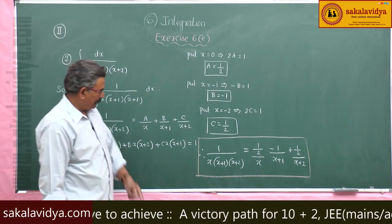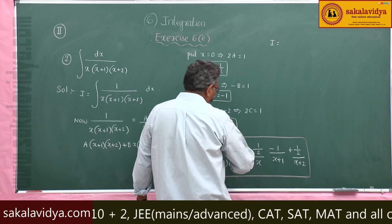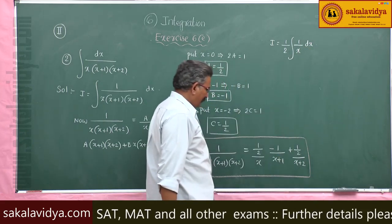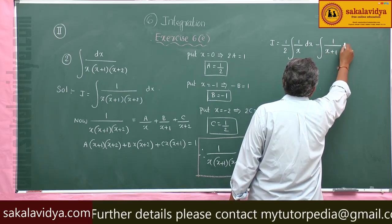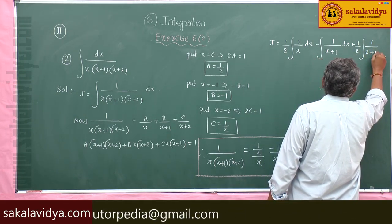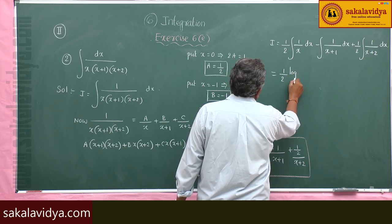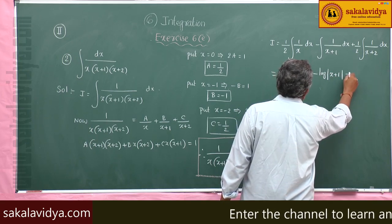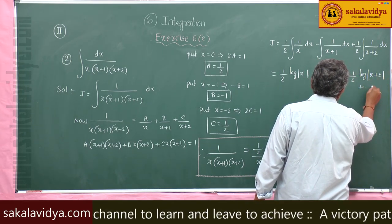Now we have to find the integral of each term. So I equals (1/2) integral of (1/x) dx minus integral of 1/(x+1) dx plus (1/2) integral of 1/(x+2) dx. This equals (1/2) log|x| minus log|x+1| plus (1/2) log|x+2| plus C.